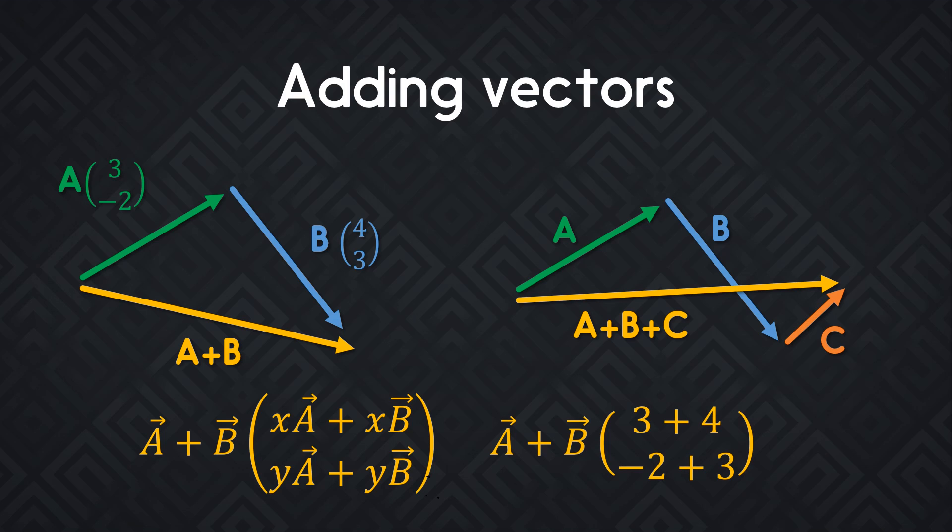If you have three or more dimensions, you add these as well separately. For example, if we take the vectors at the top, A has coordinates of 3 and minus 2. B has 4 and 3 as its coordinates. When you add them, you add the x of both vectors, so that's 3 plus 4. And then you add the y of both vectors separately, that's minus 2 plus 3. This would give you a vector of length 7 on the x-axis and 1 on the y-axis.